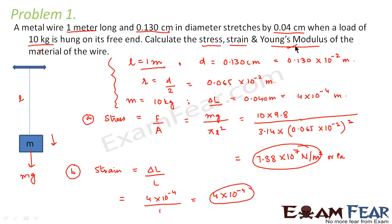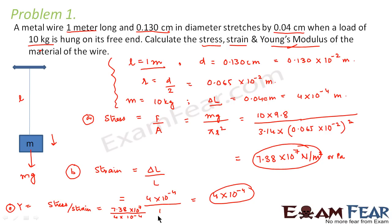Finally, we calculate Young's modulus, which is the ratio of stress to strain. Dividing the stress value 7.38 × 10⁷ by the strain value 4 × 10⁻⁴ gives Young's modulus = 1.845 × 10¹¹ Newton per meter square, or Pascal. This was a straightforward problem where all values were given — you just apply the formula and substitute.